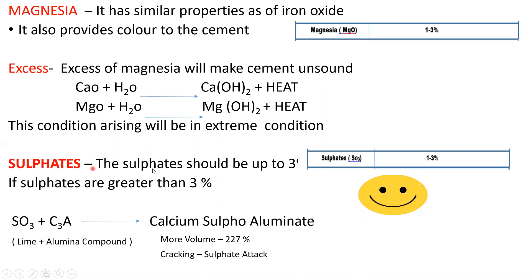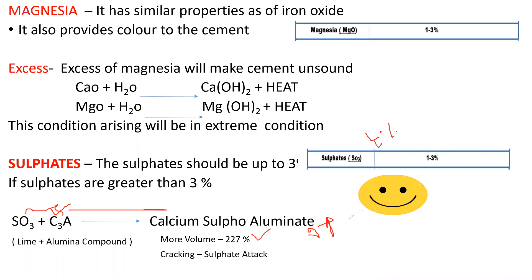The sulfate content should be in between 1 to 3 percent. If sulfates are more than 3 percent, the excess sulfate reacts with C3A — which is a lime and alumina compound — forming calcium sulfoaluminate. This calcium sulfoaluminate results in almost 227 percent volume increase, which causes cracking of the cement. This phenomenon is called sulfate attack.